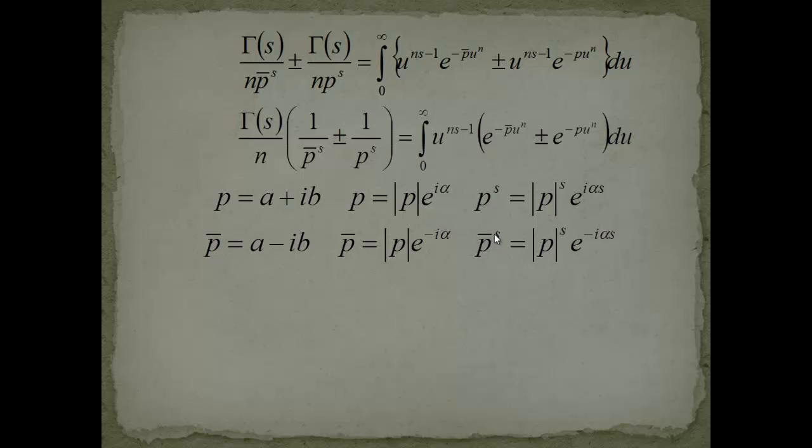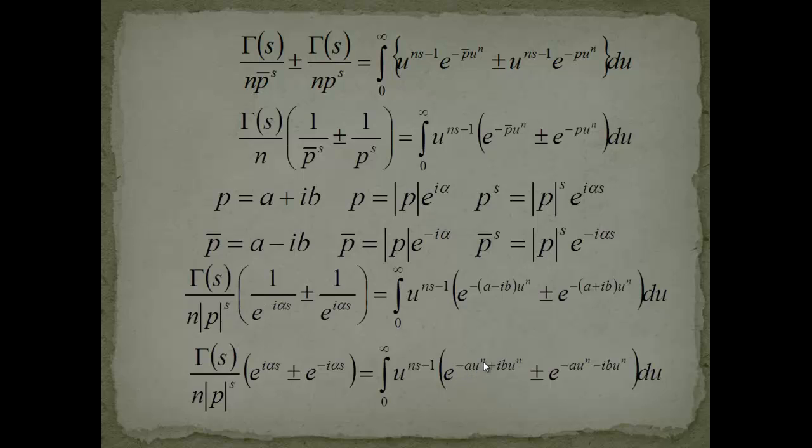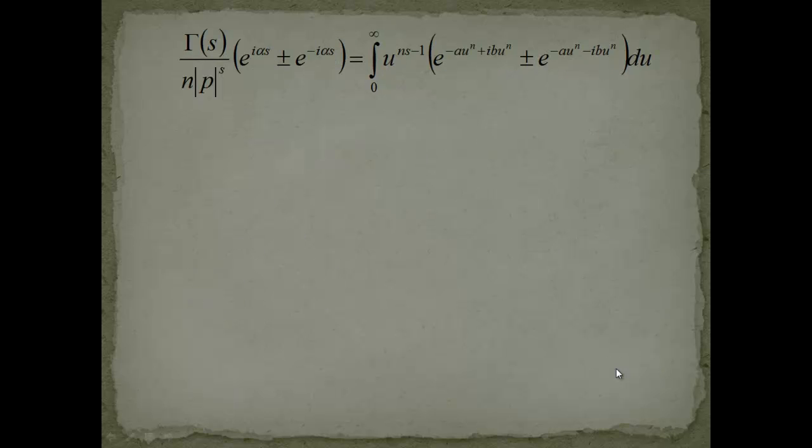Now, you see that p to the s and p complex conjugate to the s, can be just expressed by |p| to the s, the magnitude of p, and only differ by this part. This is why you can just take this and take it out of these both equations, both parts. We take this out, and we are only left with these bodies, e to the minus i alpha s, and what we will do is we change its position. If we go to the numerator, this minus will become a plus, and the same for this right-hand body, it will become a minus. On the right-hand side, what will happen is, we have these bodies, and if we multiply out, we will see something very nice happening. We get e to the minus a u to the n, and here we have the same, so we can factor this out, and we have e to the i bu to the n plus minus e to the minus i bu to the n. Now let's jump ahead and see what will happen with that.